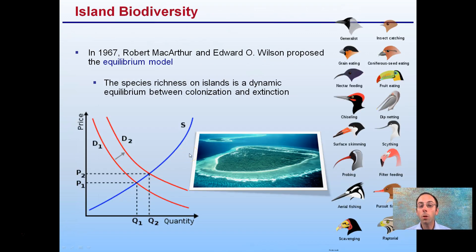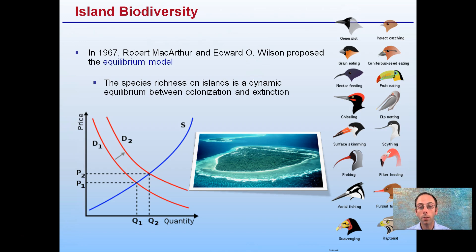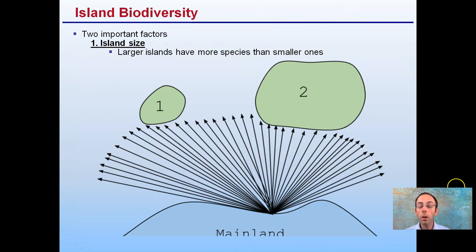Now let's look at a smaller scale — island biodiversity — using an equilibrium model. Species richness on an island is a dynamic equilibrium between colonization and extinction. We look at islands because they represent a very small, contained region with fewer variables to consider.